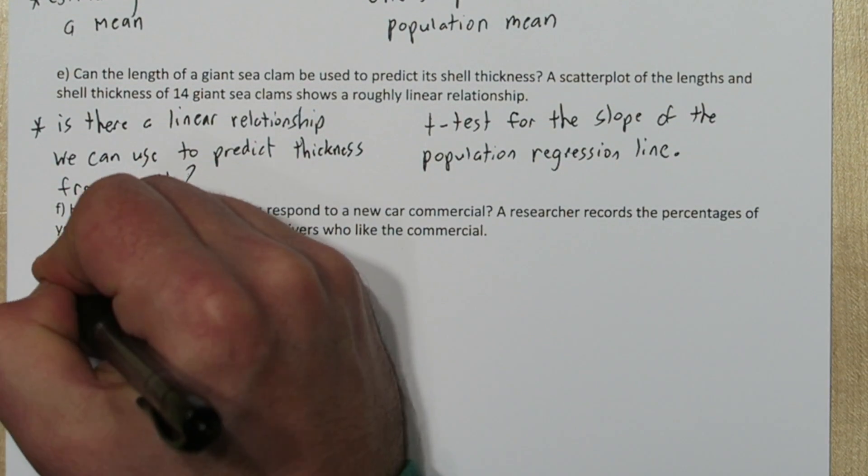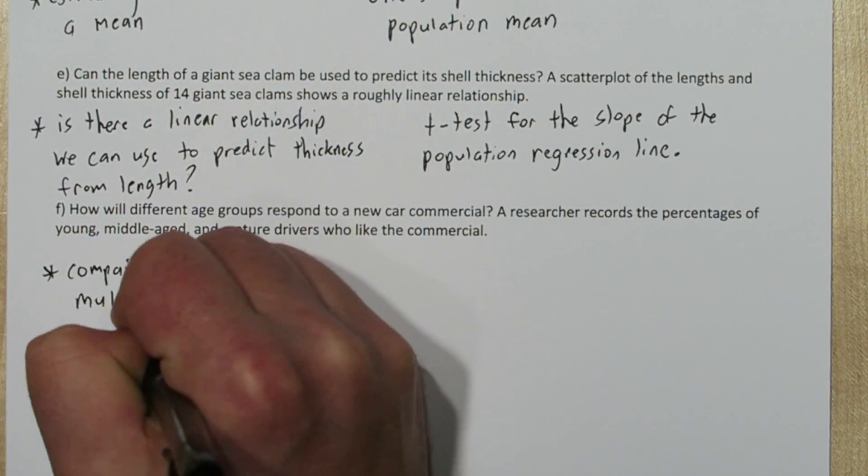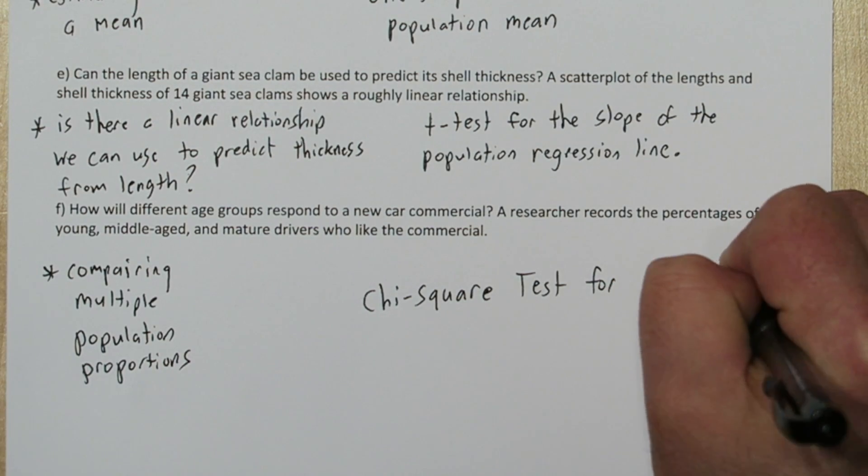In Part F, we're comparing multiple population proportions, so this is a chi-square test for homogeneity.